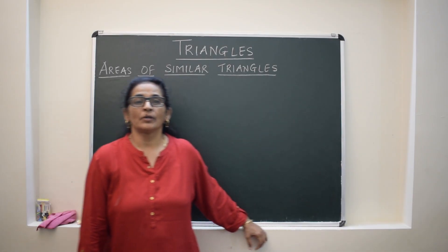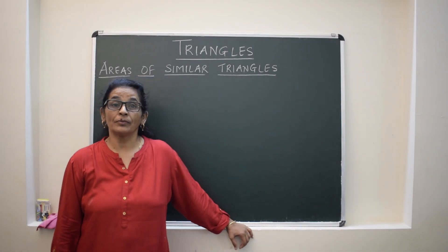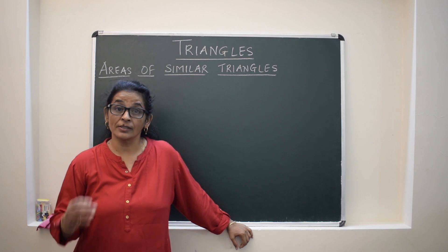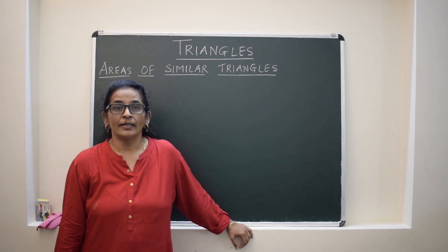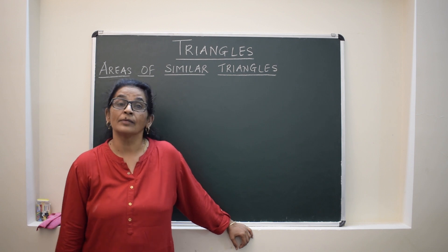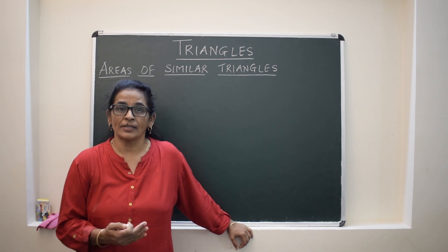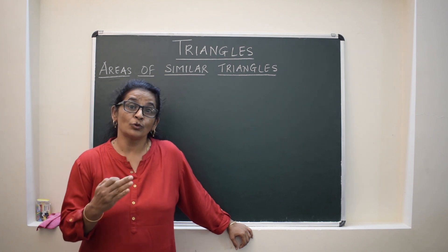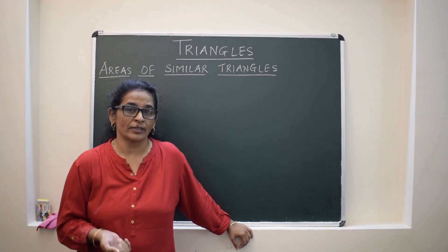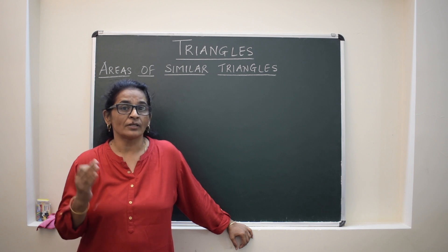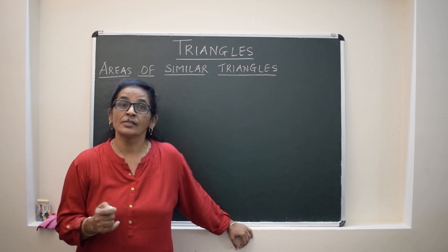In this lecture we will discuss the theorem on areas of similar triangles and some results based on that. When two triangles are similar, the theorem states that the ratio of their areas is equal to the square of the ratios of their corresponding sides.